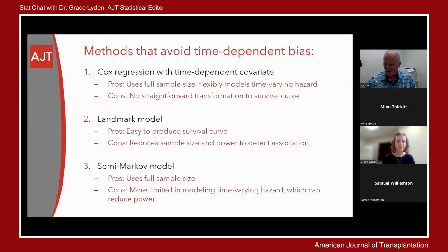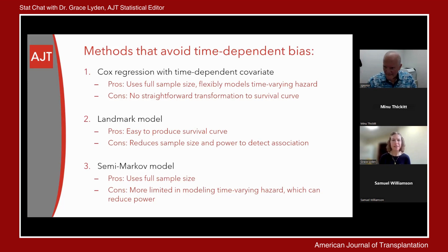We believe that the time-dependent covariate approach would generally offer greater statistical power. The landmark method is easy to use and probably the most widely used of the three methods in the clinical transplant literature, but with the caveat that it may suffer from reduced statistical power compared to the other two approaches. Correctly modeling the shape of the hazard function does have an impact on power — another reason why Cox regression's flexibility actually translates into higher power.